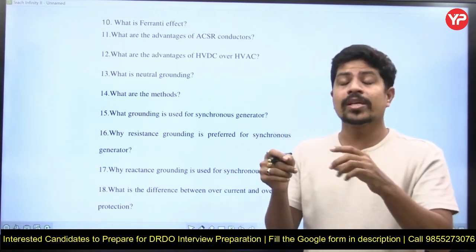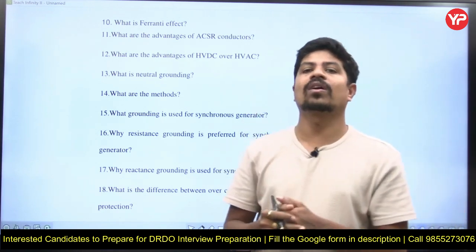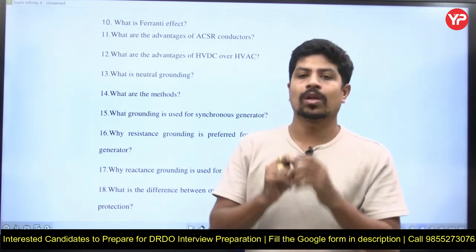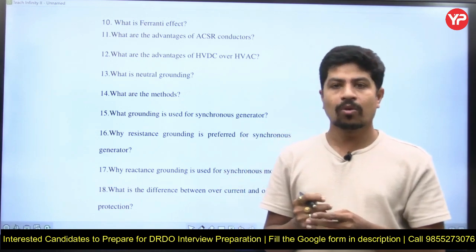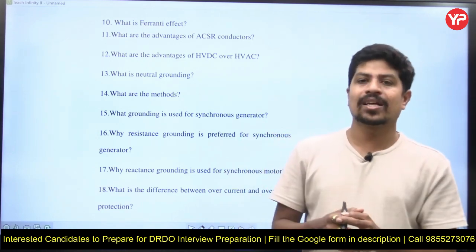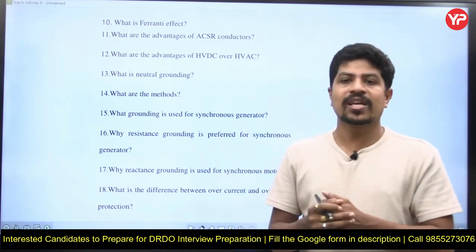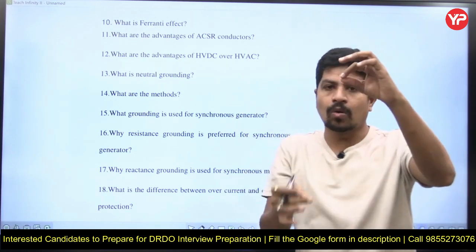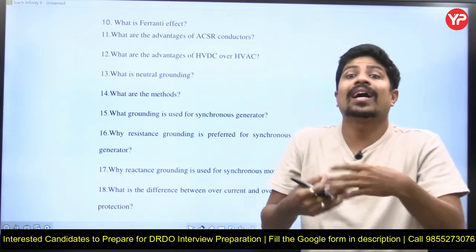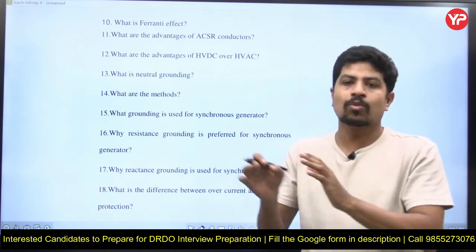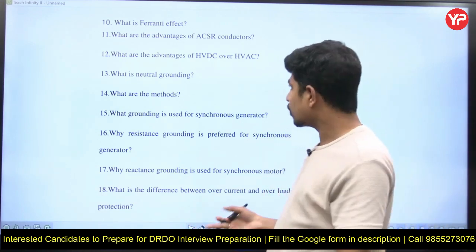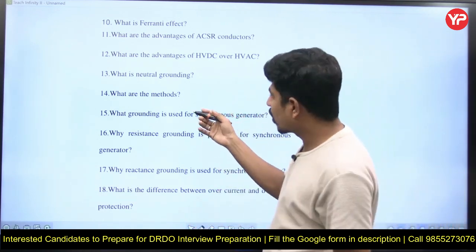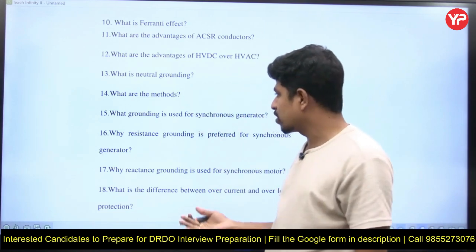The purpose of neutral grounding is to provide a closed path for the flow of fault current and to avoid a floating neutral. Earthing is different: connecting the body of equipment to the ground for operator safety is called earthing. Neutral grounding and earthing are not the same. Another question is: what are the different methods of neutral grounding?